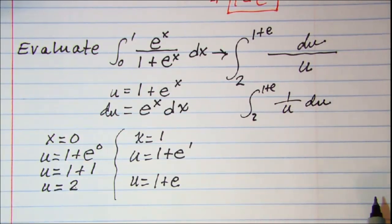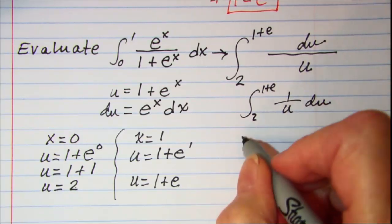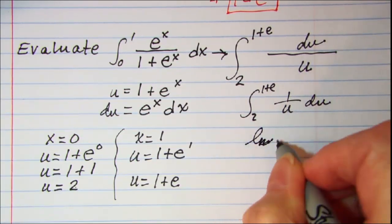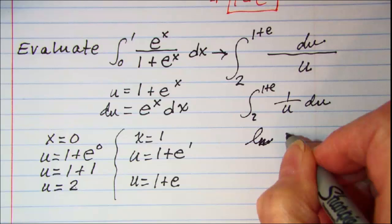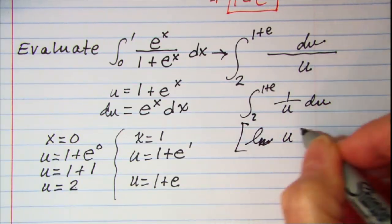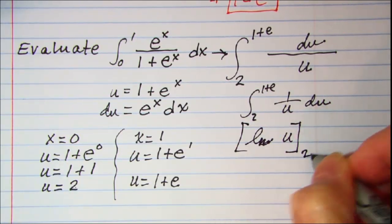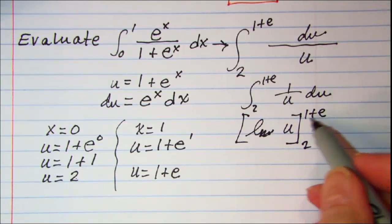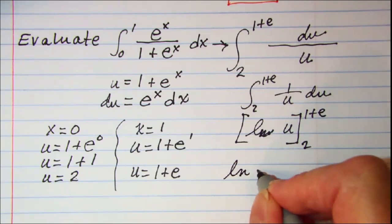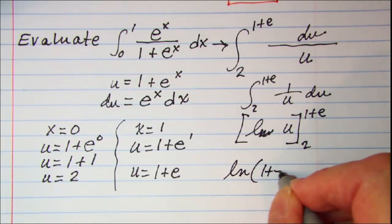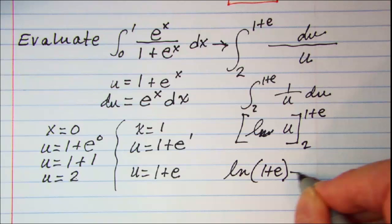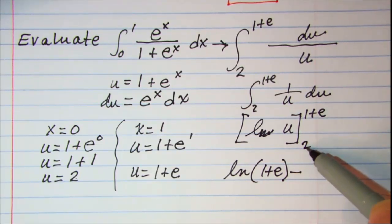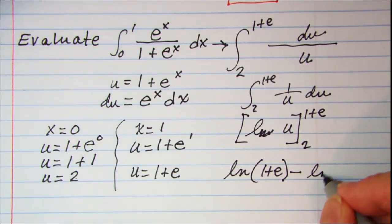Which we know is ln. So this is ln of u evaluated from 2 to 1 plus e. We'll put in 1 plus e first, so ln of 1 plus e minus, and then we'll substitute in 2, so ln 2.